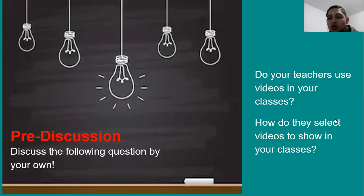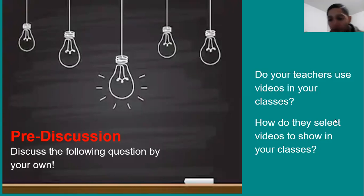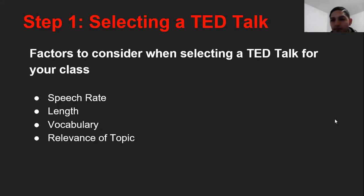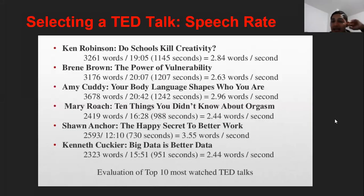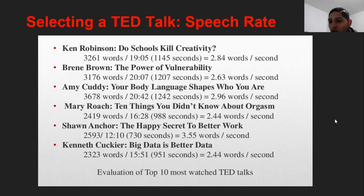How do we choose videos to show in class? Well, we usually follow a book, but that's all too easy. We need to select input in an appropriate manner. We need to consider the following factors: the speech rate, the length, the vocabulary load, and the relevance of the topic. With TED Talks, you can check the number of words, revise the timing, the seconds, the words per second, and then make decisions to check to what extent it's suitable for beginners, intermediate, or advanced learners.